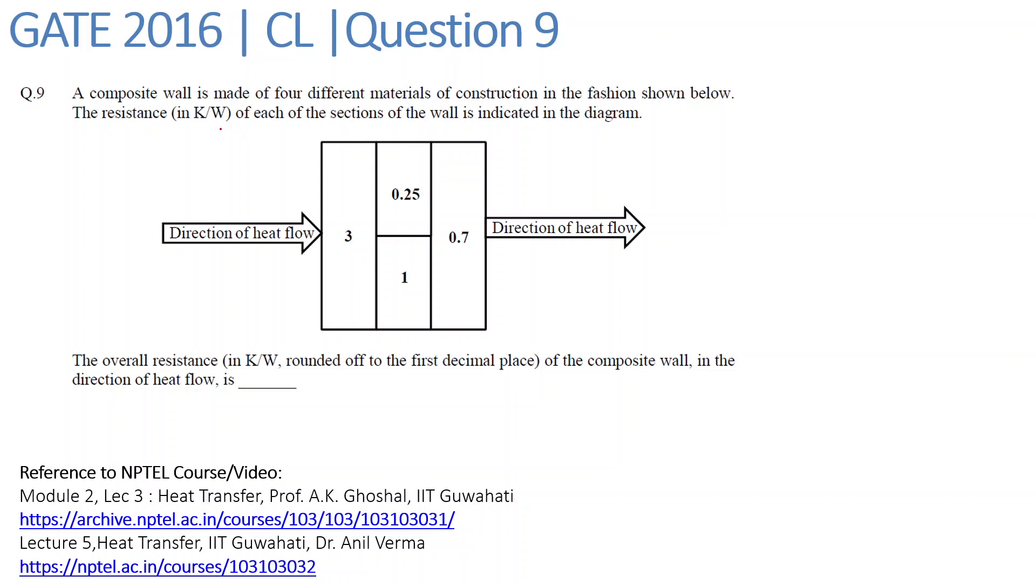The resistance in K/W (kelvin per watt) of each section of the wall is indicated in the diagram, and we have been given a direction of heat flow. The overall resistance in kelvin per watt, rounded off to the first decimal place, of the composite wall in the direction of heat flow is blank. So for this given system, we have been asked to find the resistance.